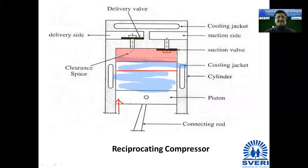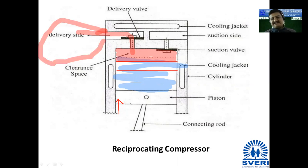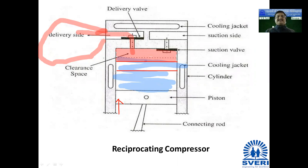When the delivery valve is pushed, the compressed air is coming out through the delivery side. And this compressed air we are collecting in cylinders, and we can get highly compressed air by using this reciprocating compressor. If you rotate this mechanism by 90 degrees, you can see the same structure like a single acting reciprocating pump. So this reciprocating compressor is not that difficult to understand.